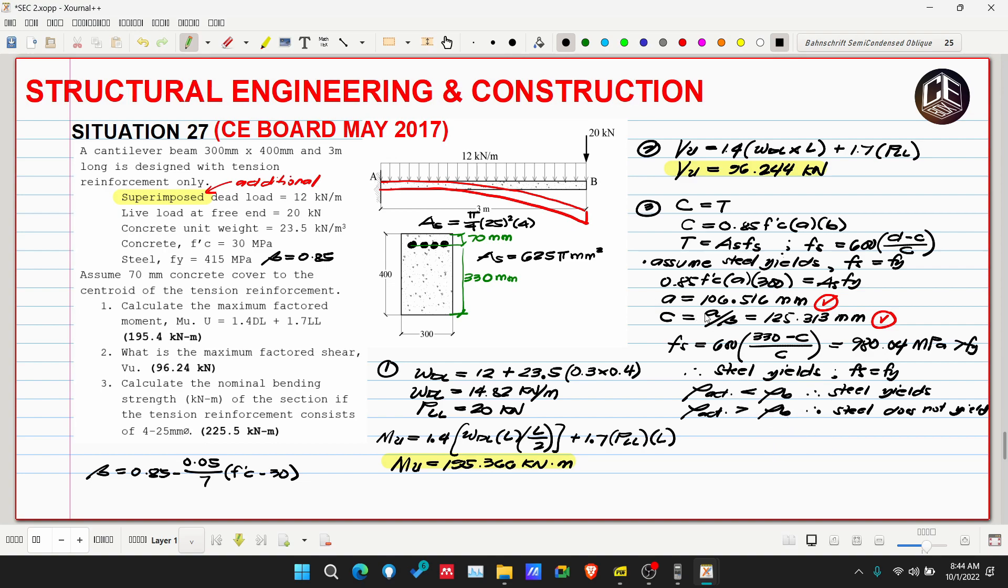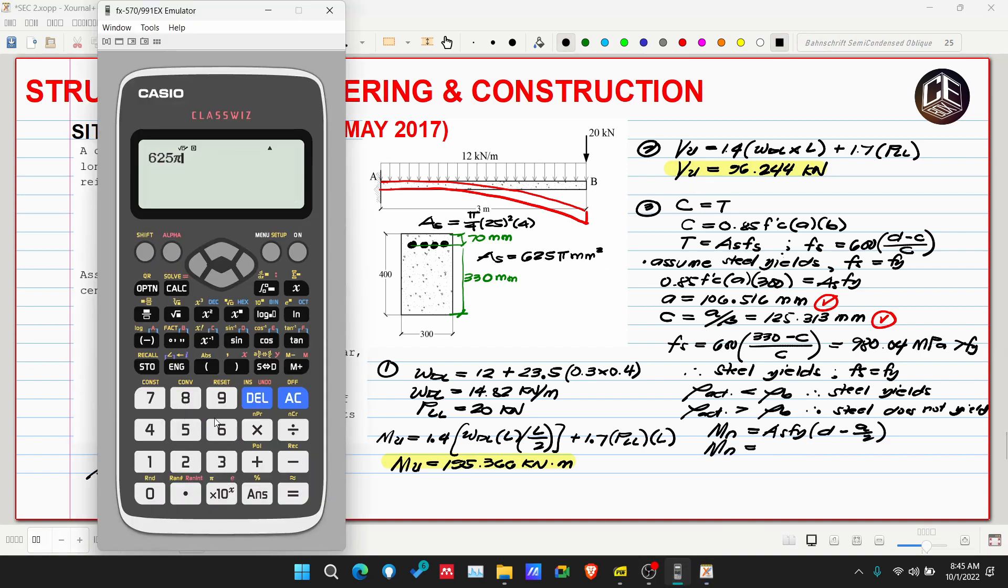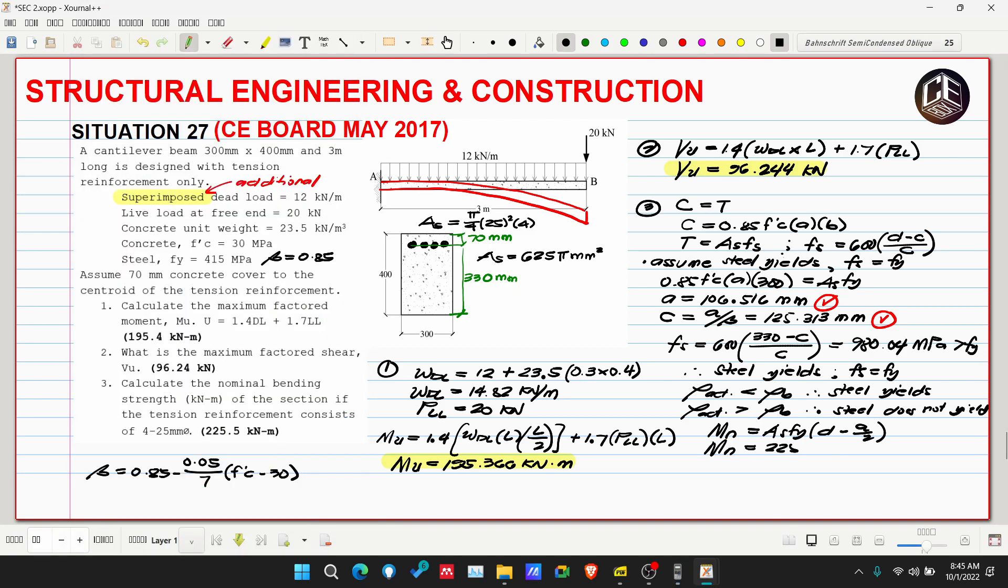You can use either method, you'll get the same answer and conclusion. We have A now, so we can get our nominal moment. Nominal moment can use either C or T, whichever you prefer. I'll use T. So As multiplied by Fy multiplied by D minus A over 2. As is 625 pi multiplied by Fy which is 415, multiplied by D which is 330, minus A which is 106.516 over 2. The answer is in Newton millimeters, so divide by 1000 squared to get kilonewton meters. So 225.503 kilonewton meters.